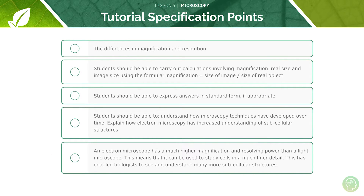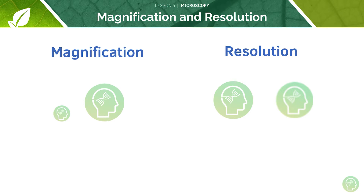First of all, let's look at the differences in magnification and resolution. Resolution is the ability to tell the difference between two points. You can see that one image is much blurrier than another — the greater the resolution of a microscope, the more detailed the image. In an image with low resolution, two nearby objects may look like one. So for example, two dots in a low-resolution image may fuse together, whereas in a high-resolution image they would appear as separate dots.